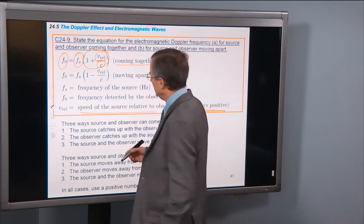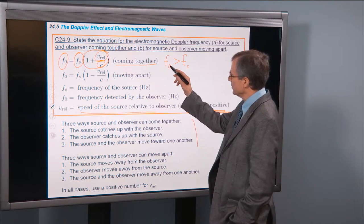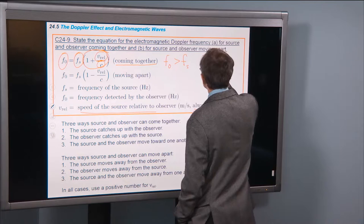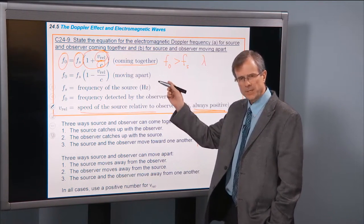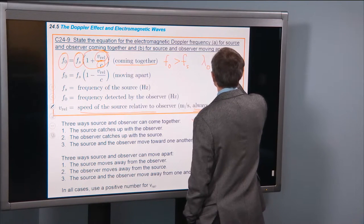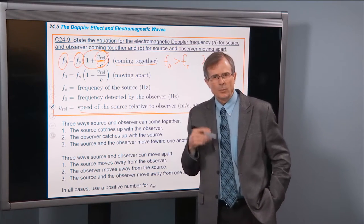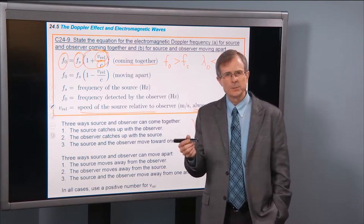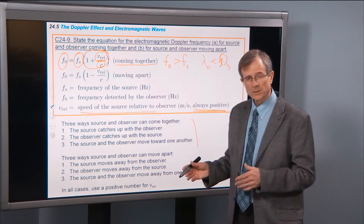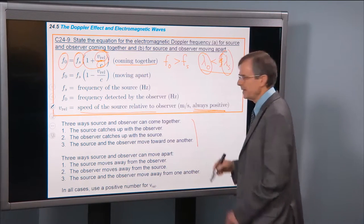A larger frequency means a smaller wavelength. So if we were to plug that frequency into c equals f lambda and find the corresponding wavelength, it would be less than the wavelength of the source. If you think about the visible spectrum, what wavelength is the largest visible wavelength? It's 700 nanometers. And what's the smallest visible wavelength? It's blue, 400 nanometers. Red has a larger wavelength than blue. We're moving to shorter wavelengths here.